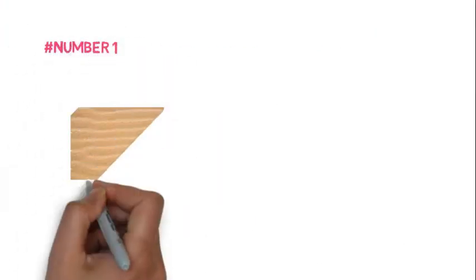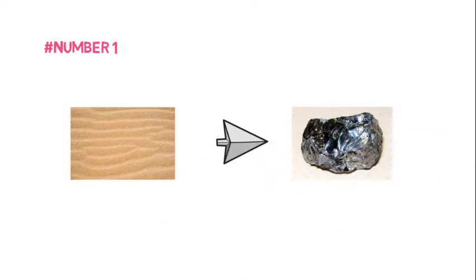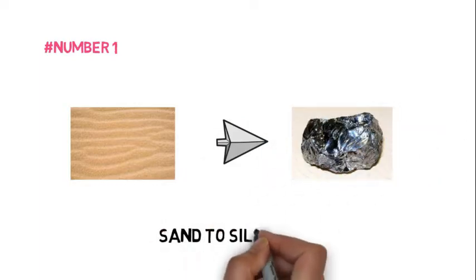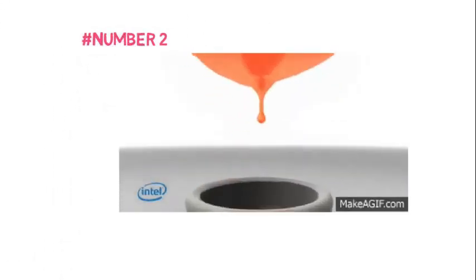To make an integrated circuit, firstly silicon is extracted from sand through chemical processes. Then silicon is molded to a certain shape and cooled.